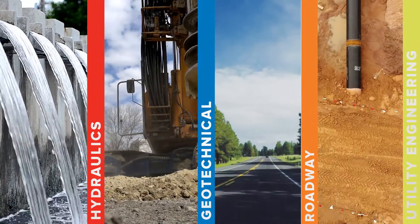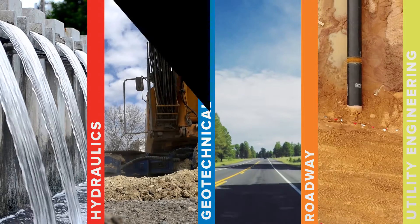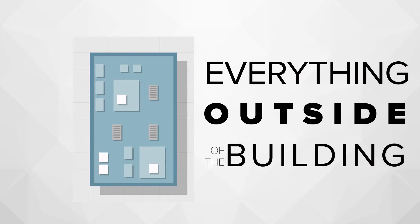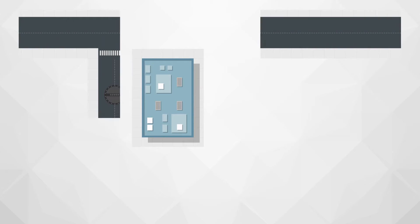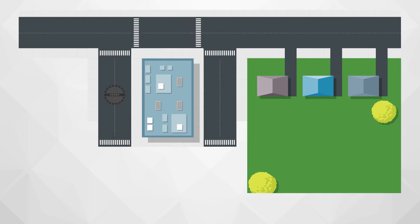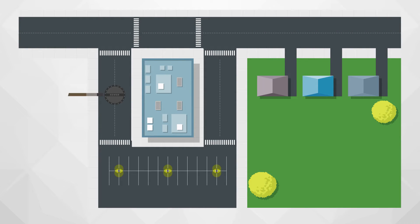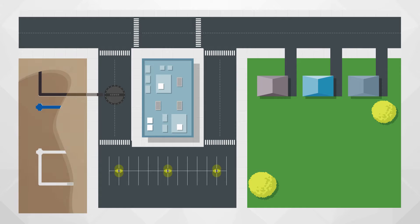Civil Site design responsibilities can be broadly summarized as everything outside of the building, more specifically including roadways, driveways, parking lots, sanitary, water, and storm sewer utilities, grading and stormwater management, and pond design.